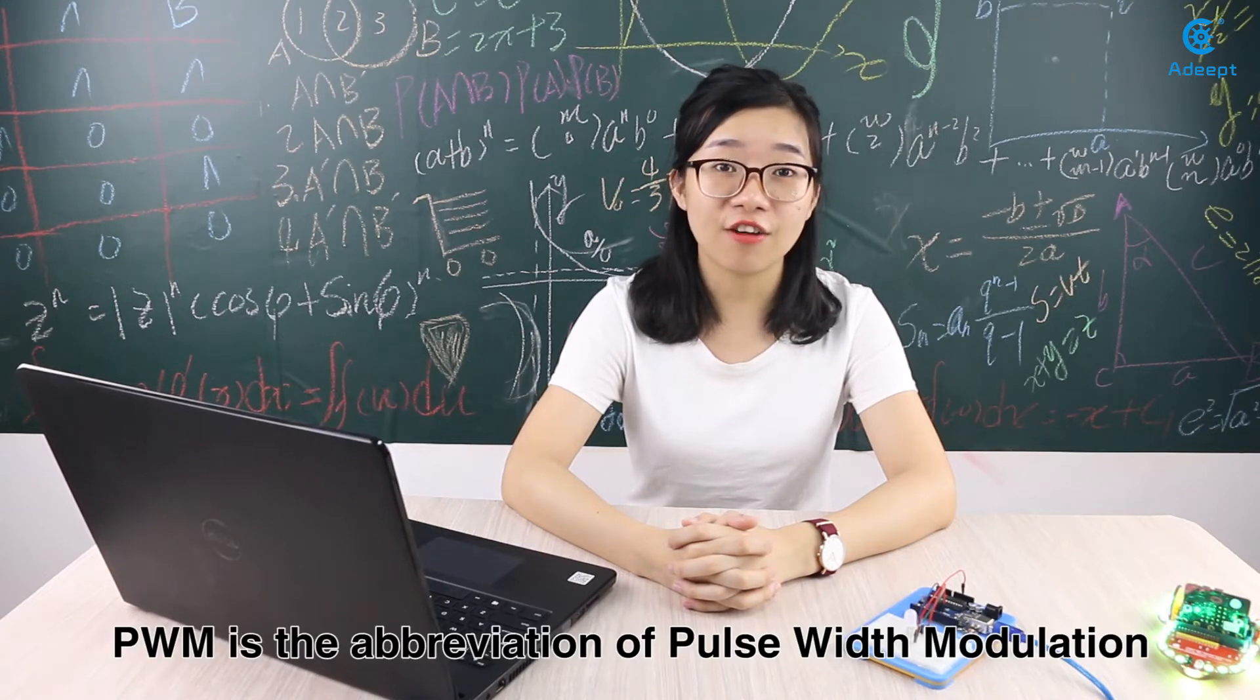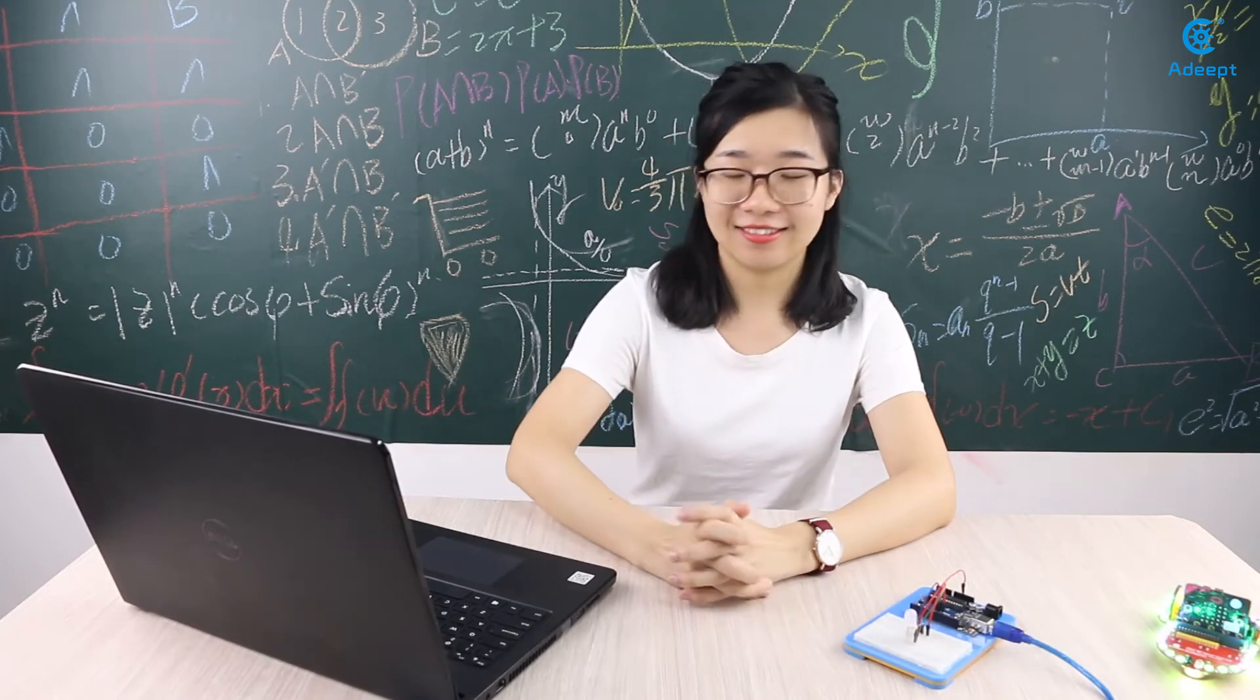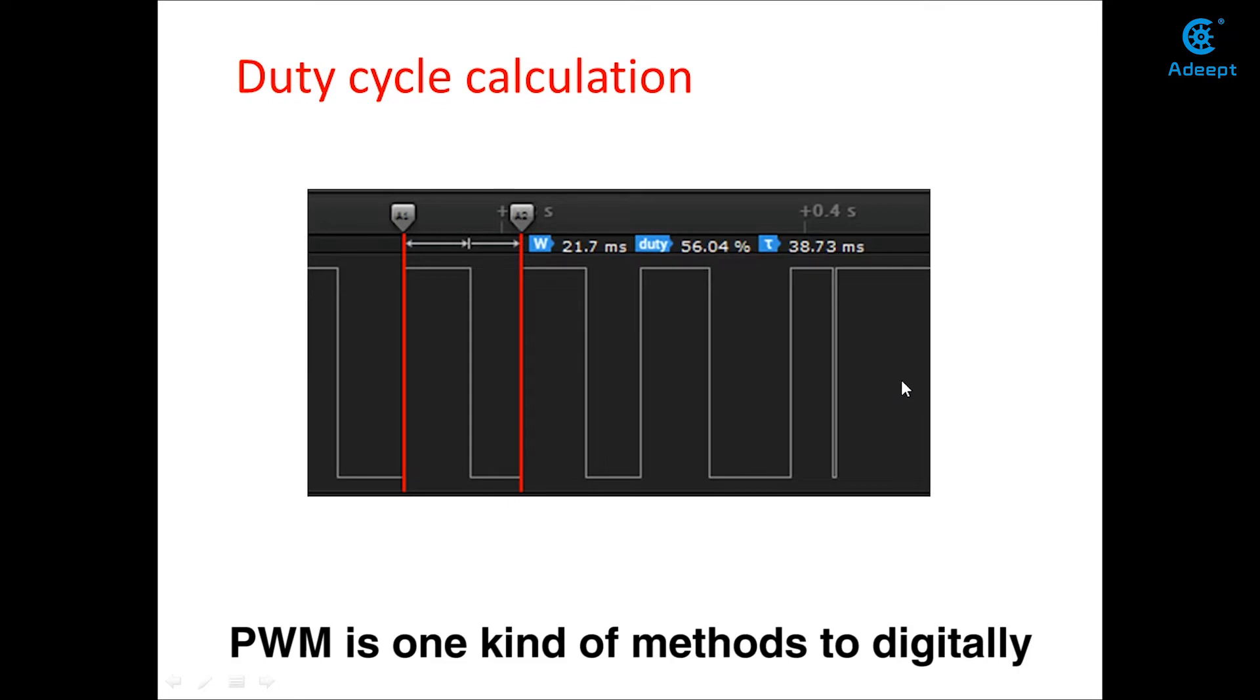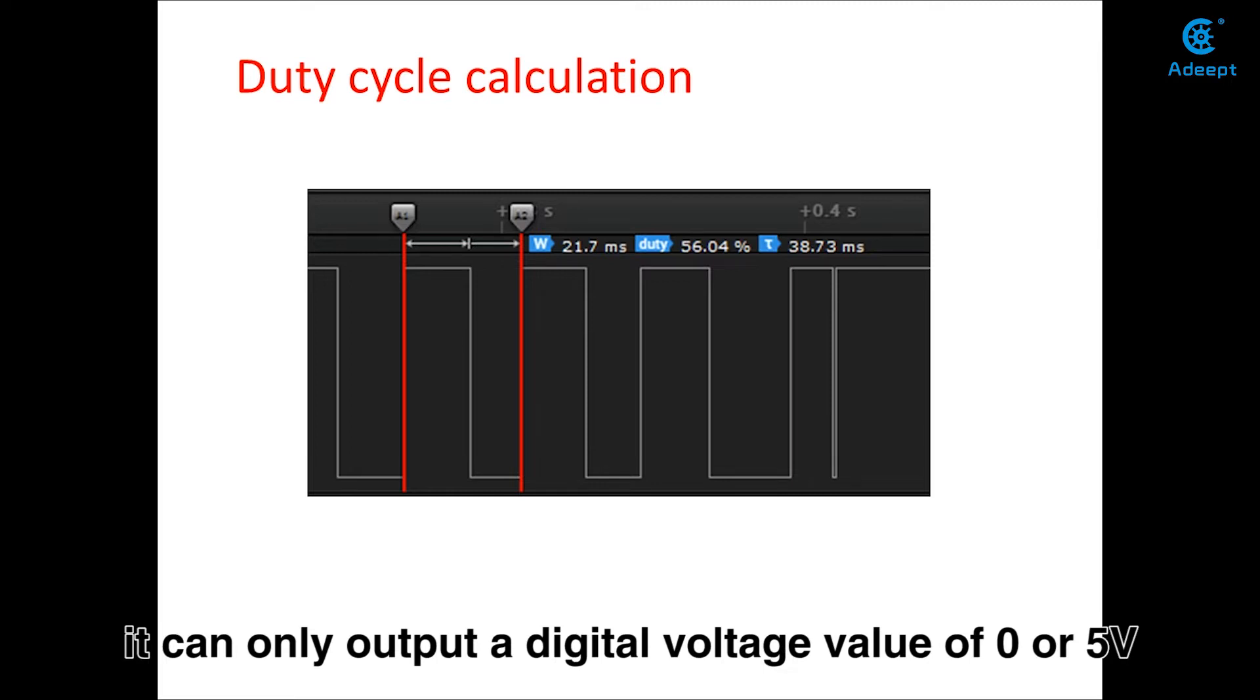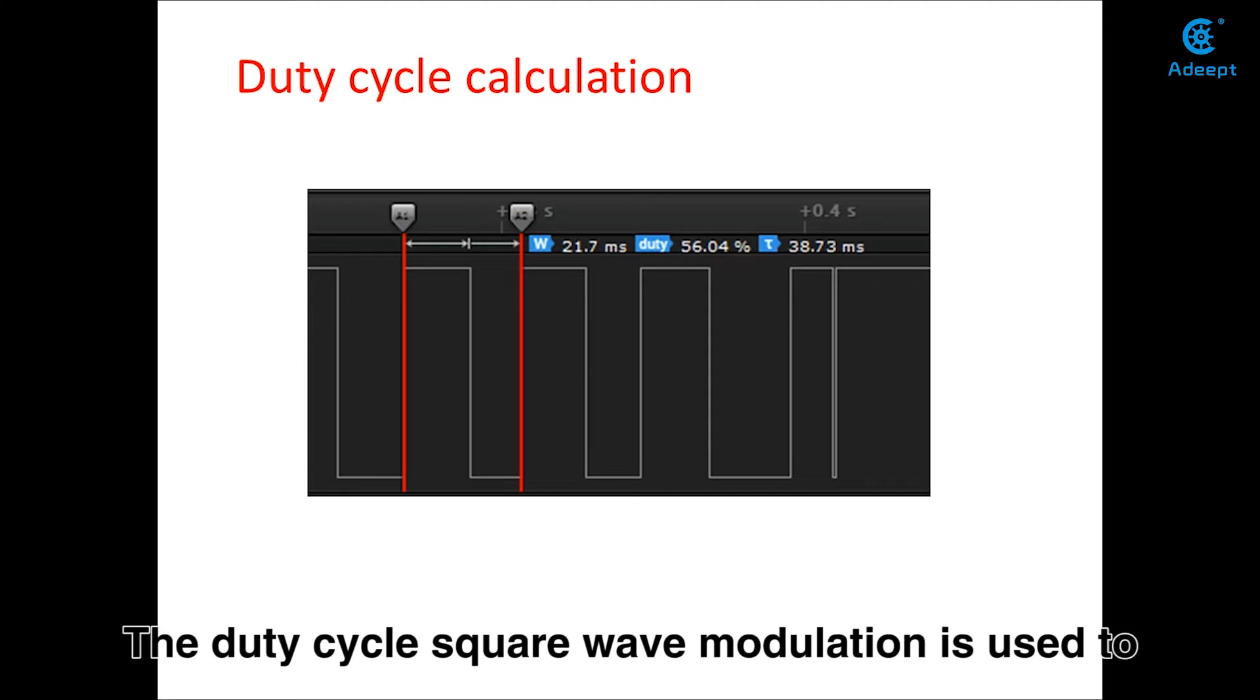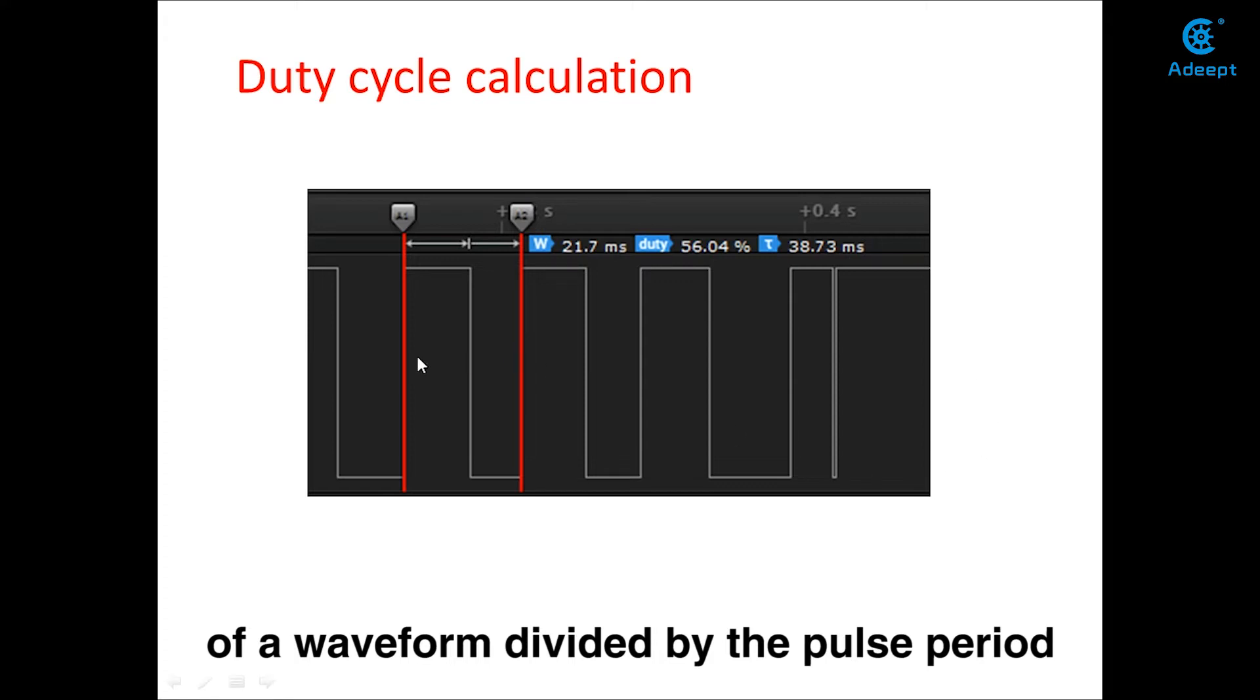PWM is the abbreviation of Pulse Width Modulation, and this brings out today's new knowledge. PWM is one kind of method to digitally encode the analog signal level. The computer cannot output an analog voltage. It can only output a digital voltage value of 0 or 5 volts. The duty cycle square wave modulation is used to encode a specific level of the analog signal. And this duty cycle refers to the time at which a high level occurs during one cycle of a waveform divided by the pulse period.